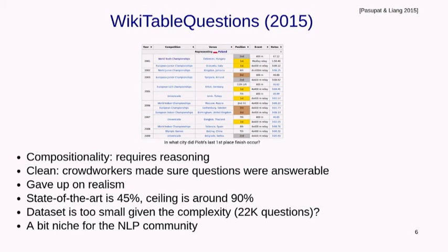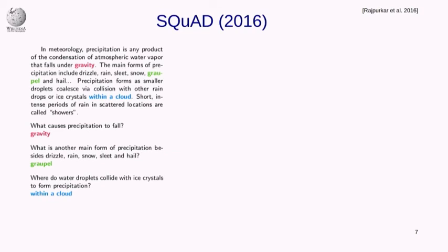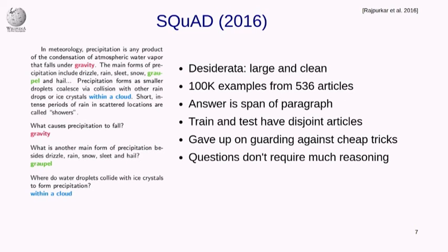WikiTableQuestions may be too small given its complexity, and a bit niche with the tables. So we moved on to developing a new dataset called SQuAD for reading comprehension. The task is very straightforward: take a paragraph from Wikipedia and answer natural language questions on it — like 'What causes precipitation to fall?' We gave up on realism and on making it especially difficult, and just aimed for a large, clean dataset.